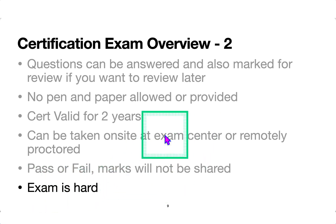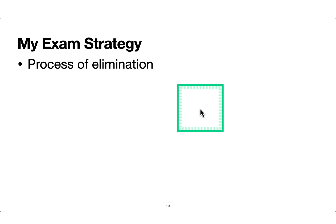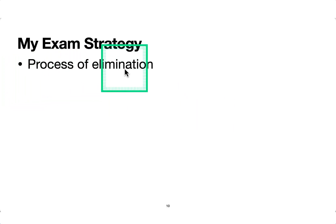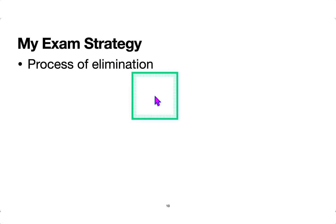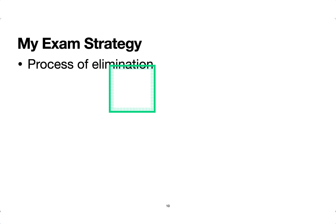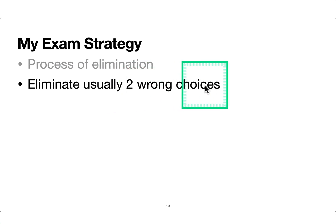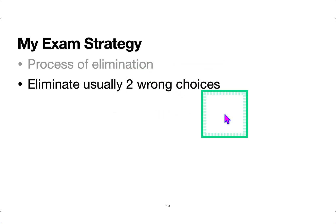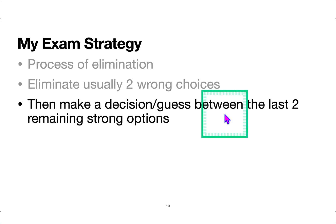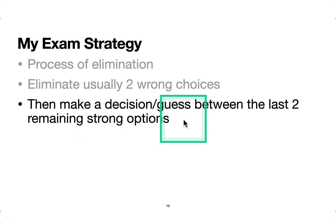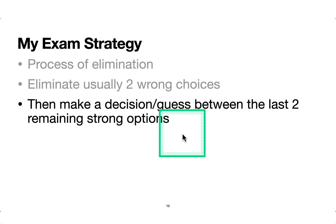If the exam is hard, there's a lot of reading and you have to focus a lot. My usual exam strategy is to go by the process of elimination. With four options, I'll quickly read through A, B, C, D and make a quick mental note — let's say A and D are definitely wrong, so I'm left with B and C as the probable solutions. I'll eliminate two wrong choices, and if I'm not sure between the remaining two, I'll mark it for review and go with one of the possible options.